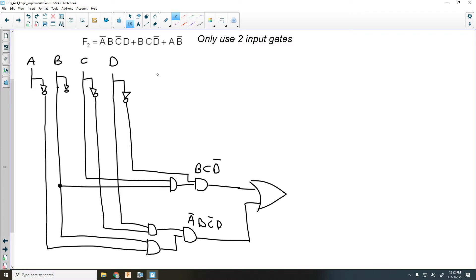So then I've got B, C, D not. And those get ORed together. And then my final term, what do I have? I have, I need A, B not. So we'll just bring A down. And B not comes down, goes into an AND gate. And then that has to be ORed. So we'll take that into an OR gate. And that will be our final equation. A, B not.